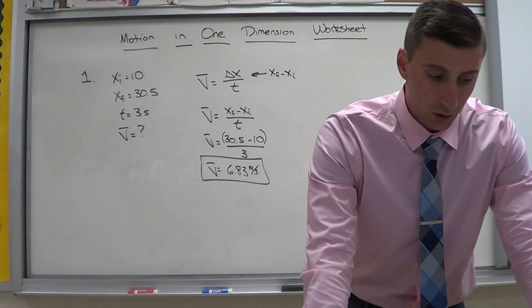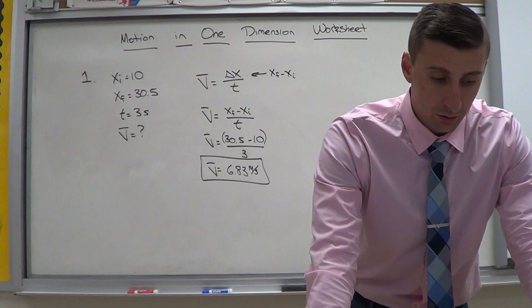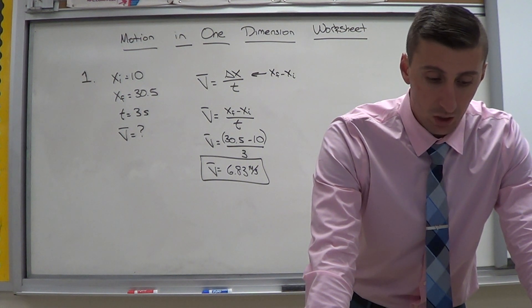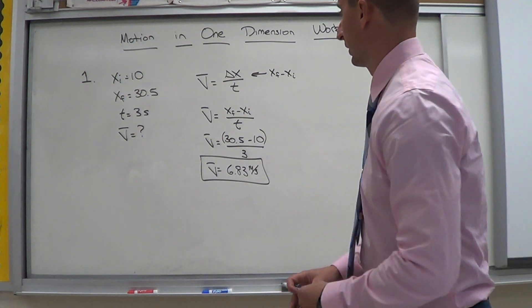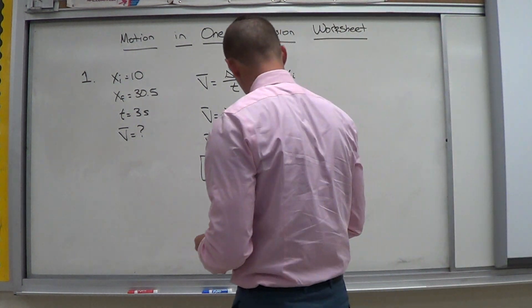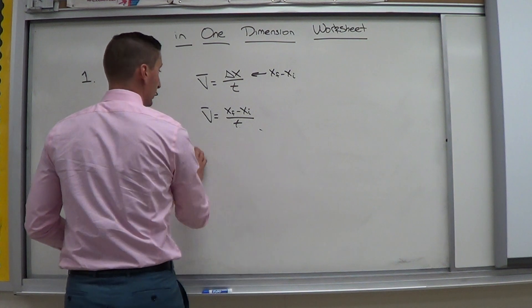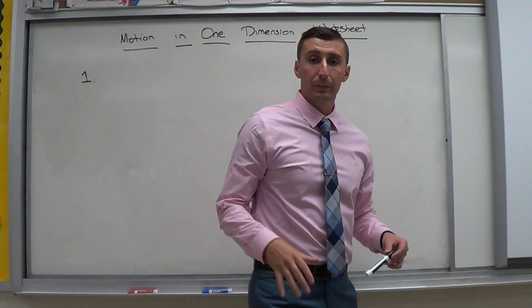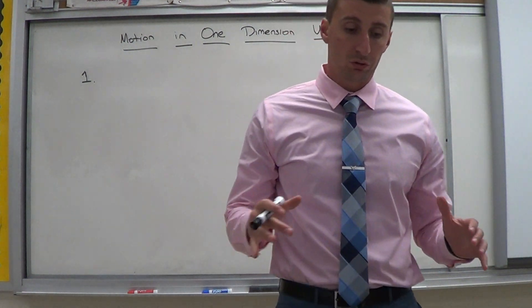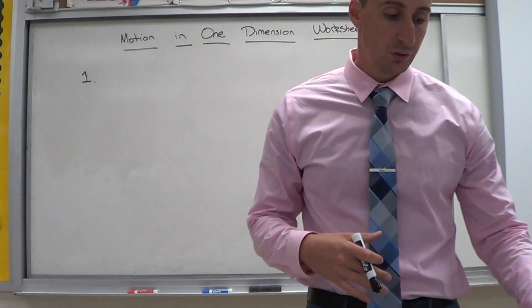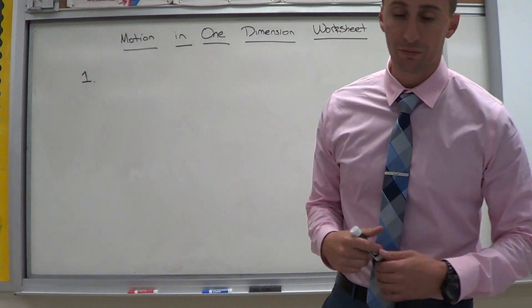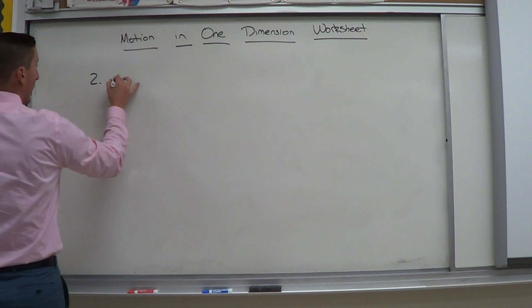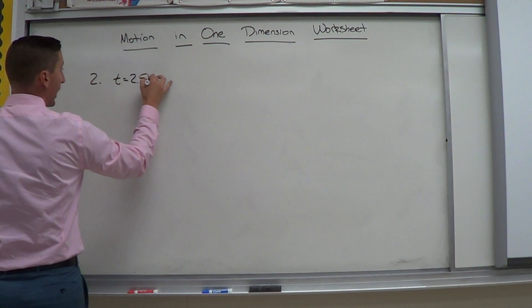Let's go on to number 2. It says how far can a cyclist travel in 2.5 hours along a straight road if her velocity is 18 kilometers per hour. Alright. So in reading this, you'll notice some things about the variables here. So let's go ahead and first off pull out what we know. So it gives us a time. It says 2.5 hours. So this is number 2. So time equals 2.5 hours.